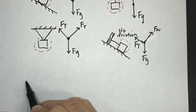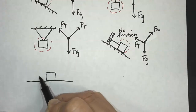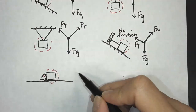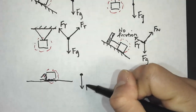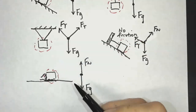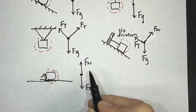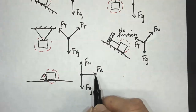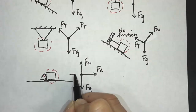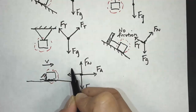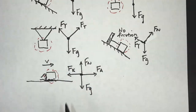Now let's take a look at a situation where someone is pushing a box. Here's a box and someone's pushing on it — a hand pushing it. The forces acting on this box: gravitational force is always down, normal force is up, and then we have a special name for the hand pushing — we call that the applied force. And because it has friction and it's moving towards the right, we're going to say it has kinetic friction.